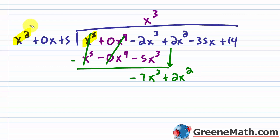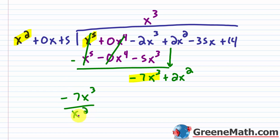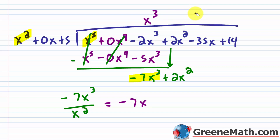I'm not at a remainder yet, so I repeat and go back to division. Leading term into leading term: negative 7x cubed divided by x squared. This is going to skip a space in the quotient — that's fine. Negative 7x cubed divided by x squared is negative 7x, so I put minus 7x in the answer.